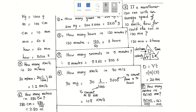Problem number three: how many seconds in 5 minutes? One minute equals 60 seconds, so in 5 minutes I have 5 times 60, which is 300 seconds.